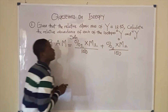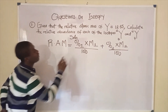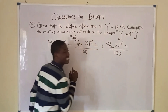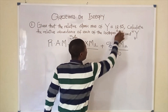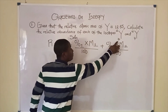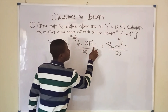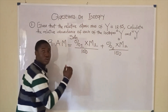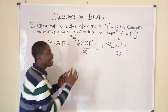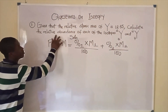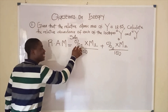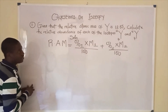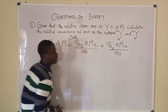Now let's identify the parameters. This is element Y, with its first and second isotopes. The value up here is the mass number and the value down here is the atomic number. M1 denotes the mass number of the first isotope and M2 denotes the mass number of the second isotope. The relative atomic mass of element Y given in the question is 12.35.